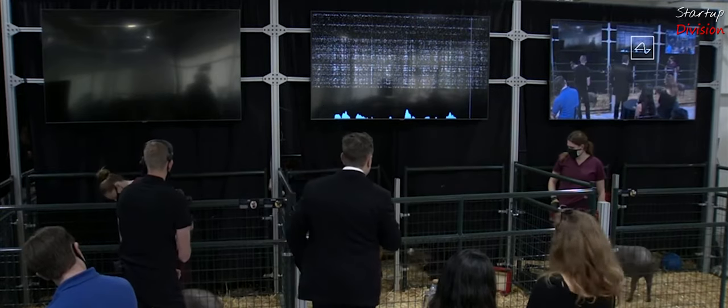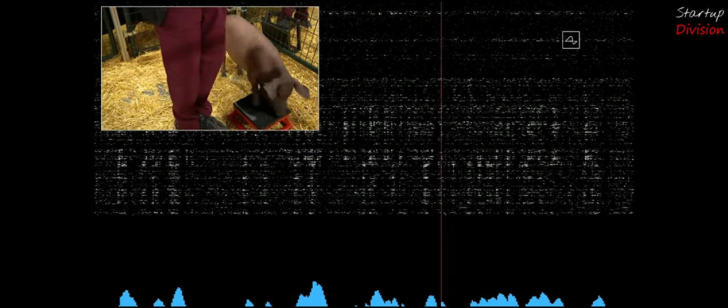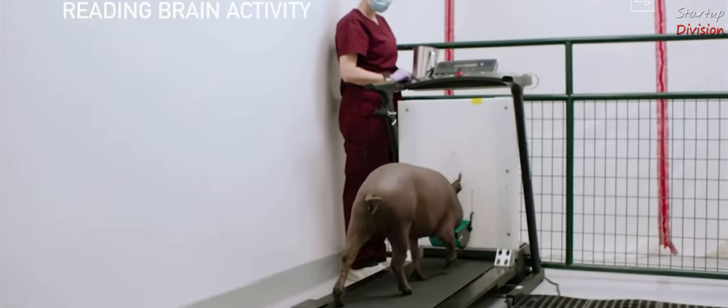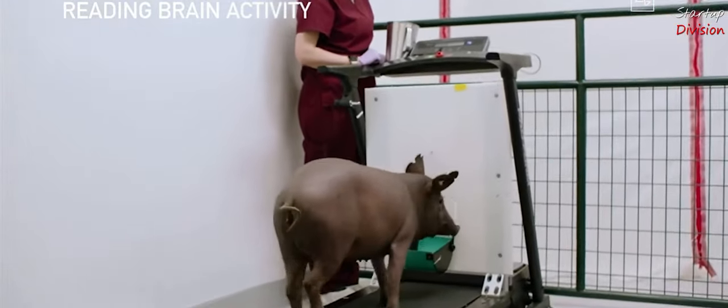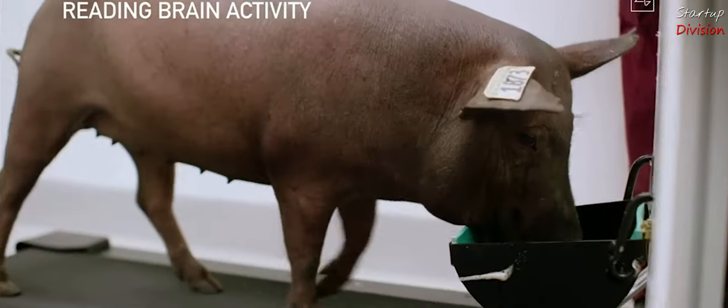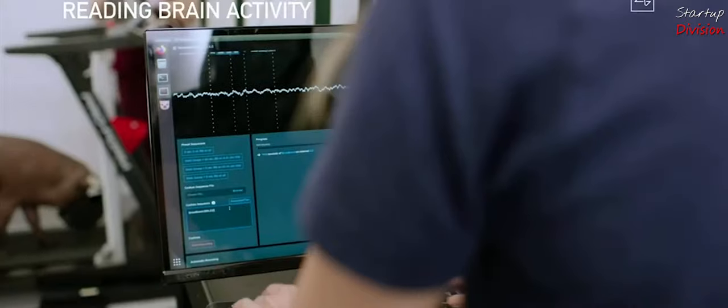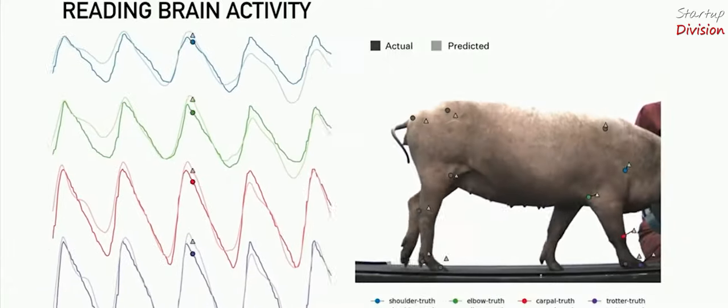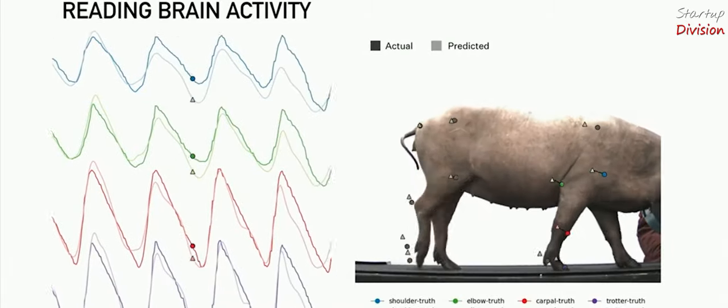The neural spikes were being picked up by the electrodes implanted in Gertrude's brain. The Neuralink was able to predict the positions of the joints as one of the pigs with implants ran on a treadmill. The results are truly amazing, as Musk predicts that in the future, people with spinal cord injuries or a severed spine can walk again.